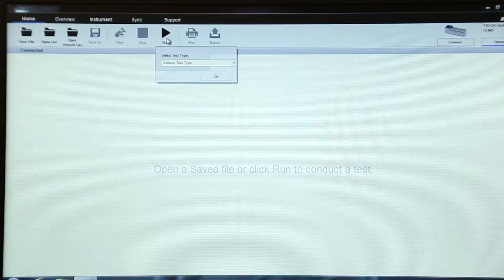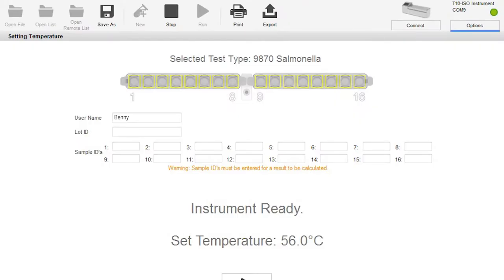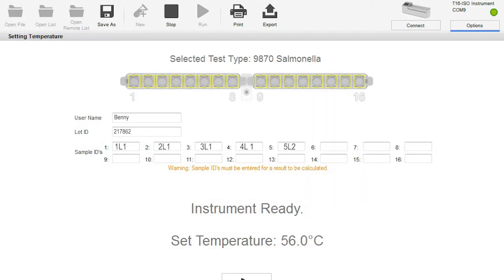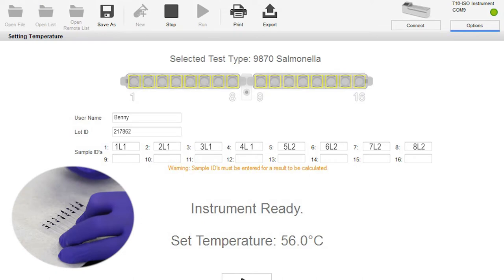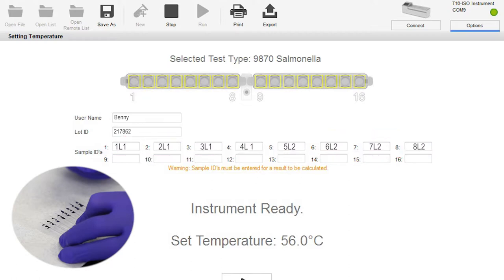Remove your gloves and, from the computer, select Run. Select 9870 Salmonella from the Test Type drop-down menu, then click OK. Fill in the username and lot ID from the kit and corresponding labels from your samples in the sample IDs. These should match the cluster tubes as well. If you do not put in a sample ID next to the well number, the reader won't read it even if it has a sample. Be sure to provide an ID for every well you're running. In this case, we are only running 8 samples, so wells 9 through 16 are empty. Any number of tests can be run at once. It does not have to be in multiples of 8.